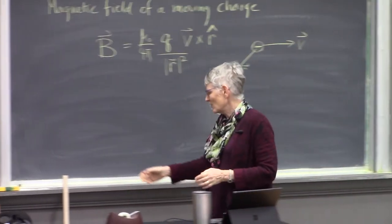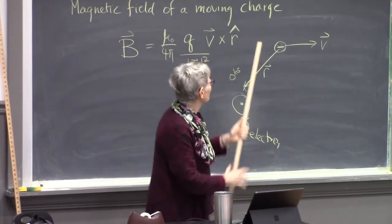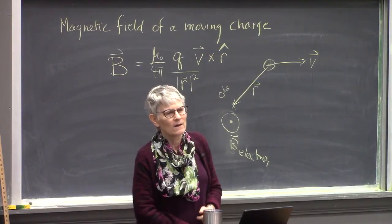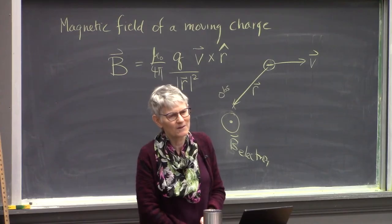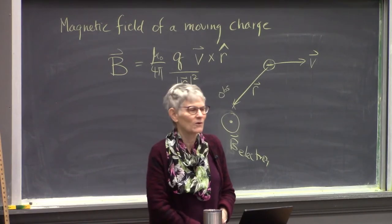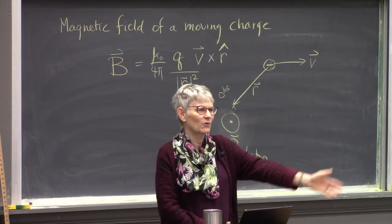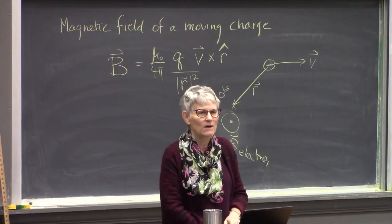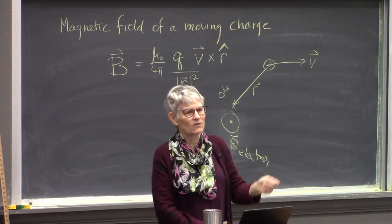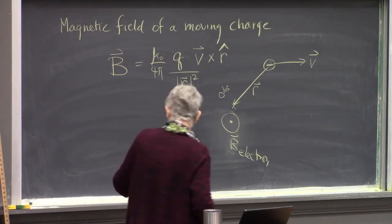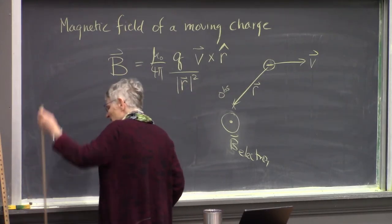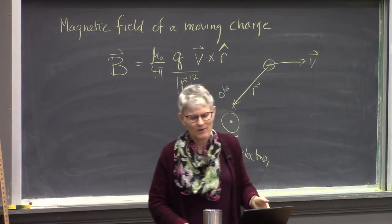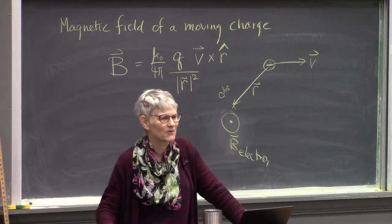That calls into question which V we're supposed to use. The answer is the V in your reference frame — if you're at rest, V = 0; if you're running past with a compass, use V relative to you. It's anomalies like this that made Einstein think hard about reference frames in motion.